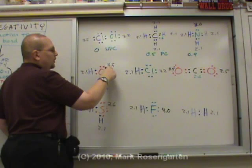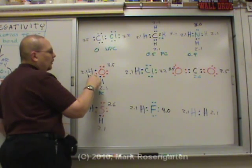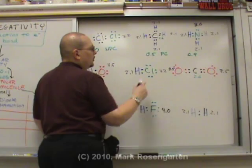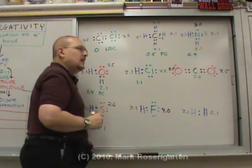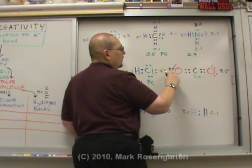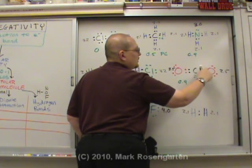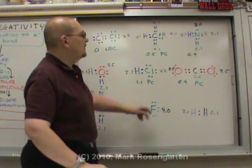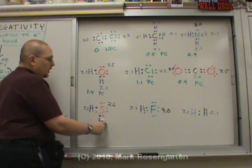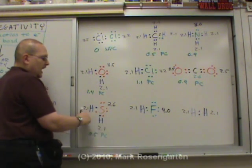The difference between hydrogen's 2.1 and oxygen's 3.5 is 1.4, putting it firmly in the polar covalent range - those are polar covalent bonds, including a double bond between oxygen and carbon. The difference between hydrogen's 2.1 and chlorine's 3.2 is 1.1, again polar covalent. The difference between oxygen's 3.5 and sulfur's 2.6 is 0.9 - those bonds are polar covalent as well. And the difference between hydrogen's 2.1 and sulfur's 2.6 is 0.5 - also polar covalent.